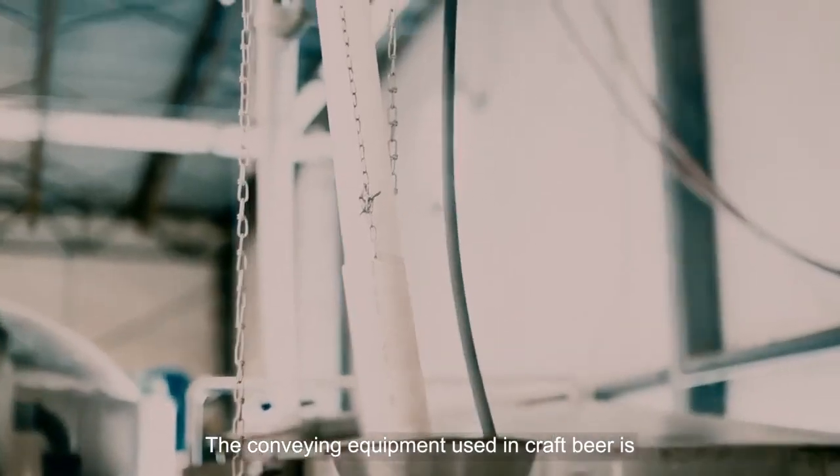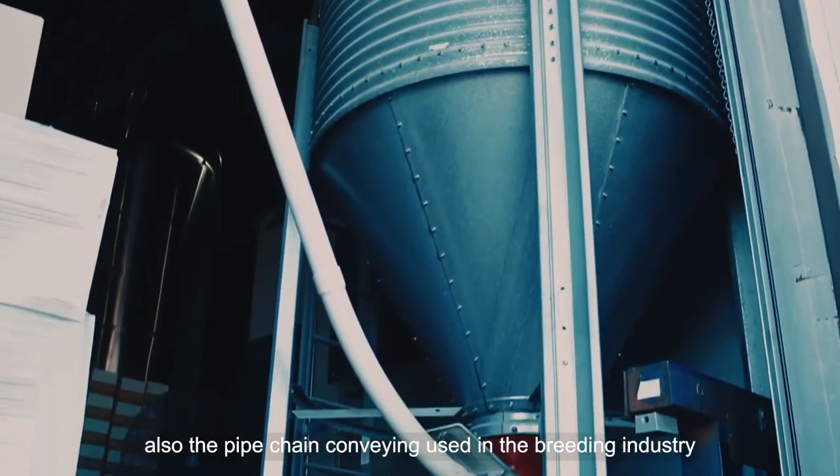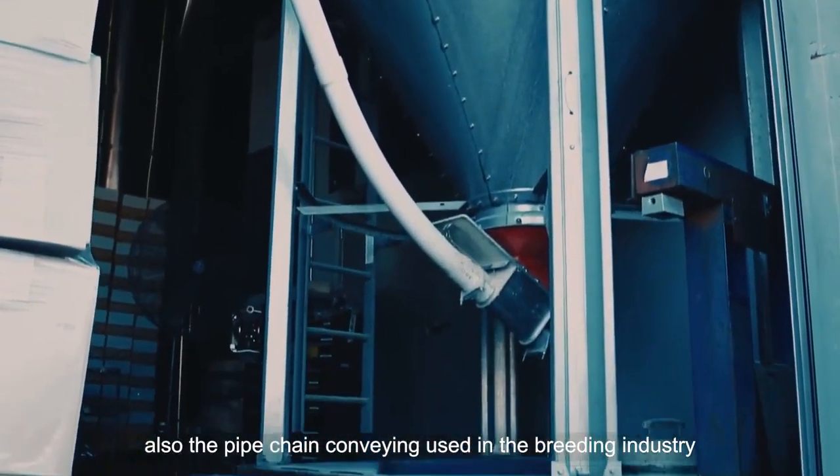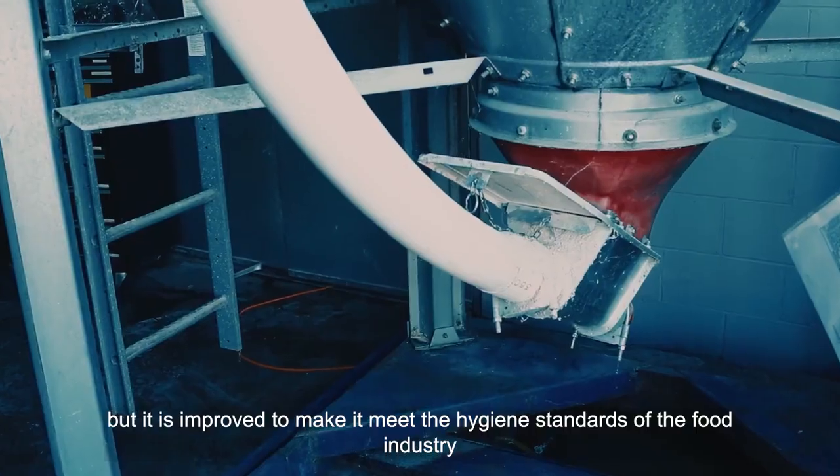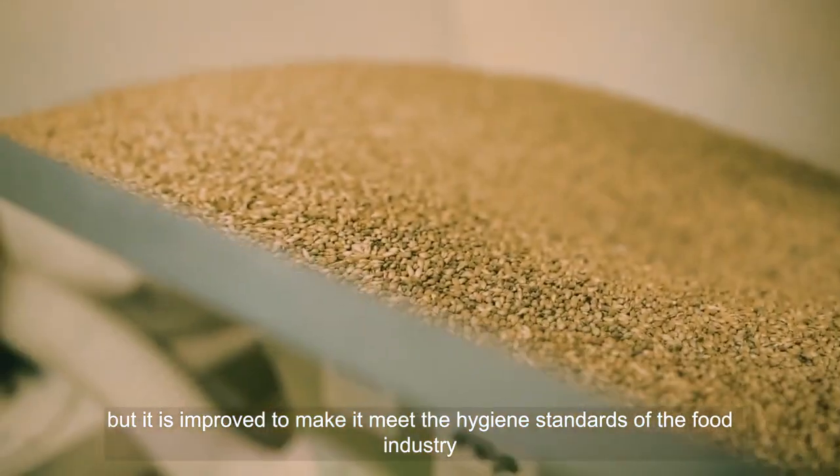The conveying equipment used in craft beer is also the pipe chain conveying used in the breeding industry, but it is improved to make it meet the hygiene standards of the food industry.